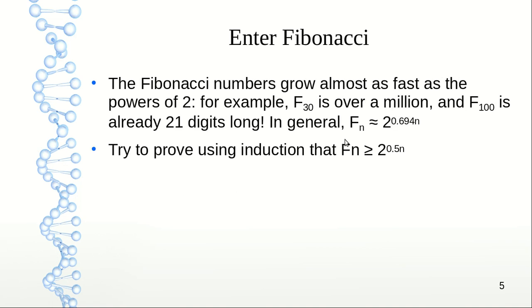These Fibonacci numbers grow almost as fast as powers of 2. F30 is over a million, and F100 is already 21 digits long. In general, fn is roughly 2 to the power 0.694n. For the viewers, try to prove using induction that fn is greater than or equal to 2 to the power n by 2.